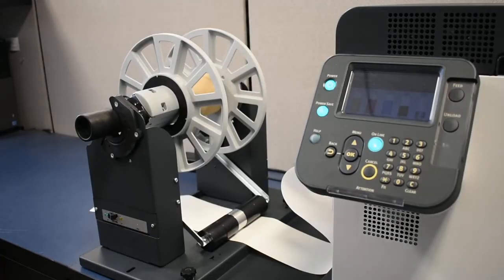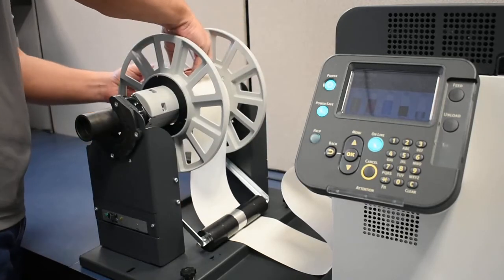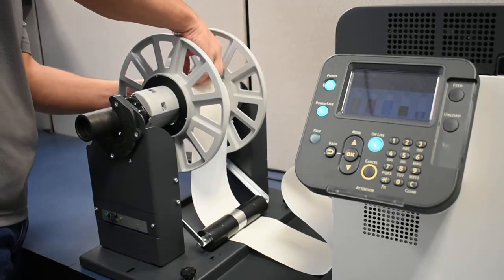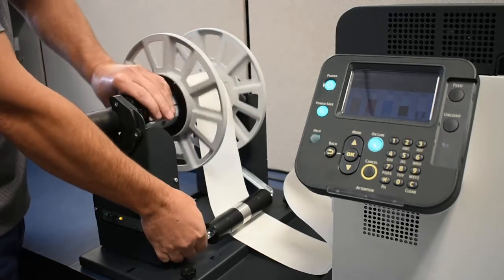With an empty core on the rewinder mandrel, attach the stock to the core. Manually turn the rewinder to take up the slack.